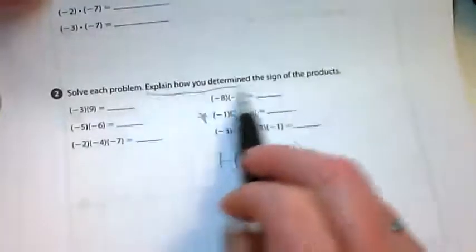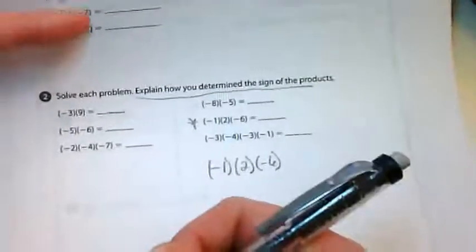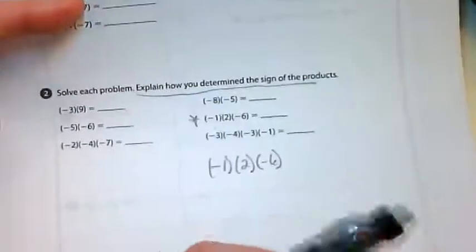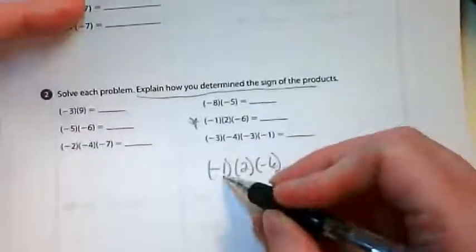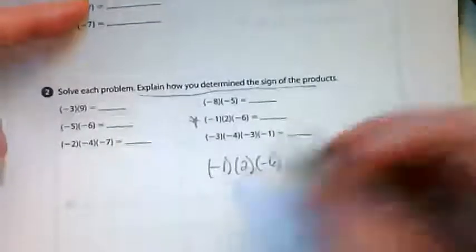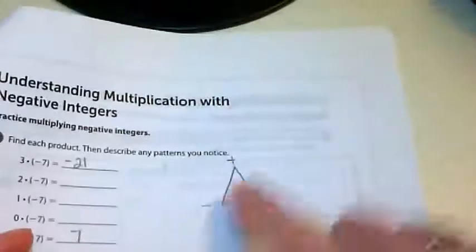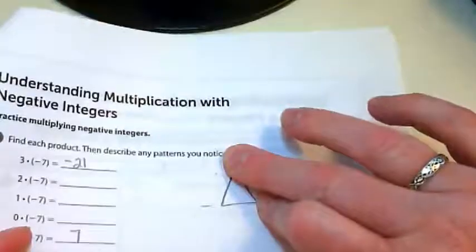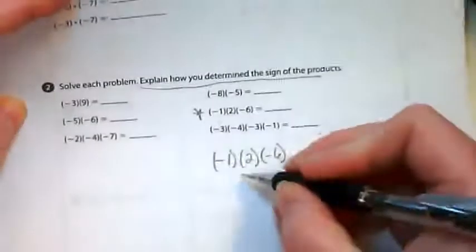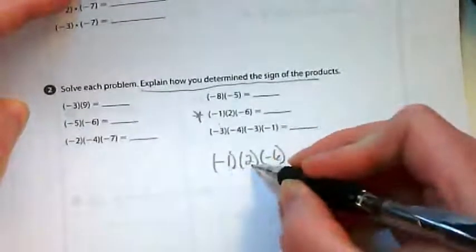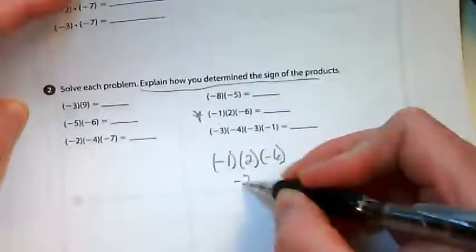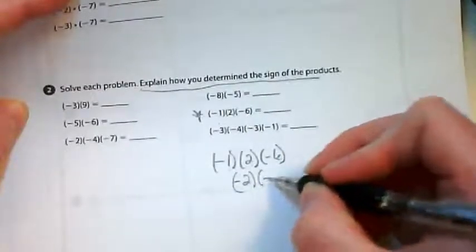Now this says explain how you determine the sign of the product, but if you're showing your work, you don't need to write a written explanation. Negative 1 times positive 2. If I go back up to my triangle, I've got a negative times a positive, so I'm going to end up with a negative.